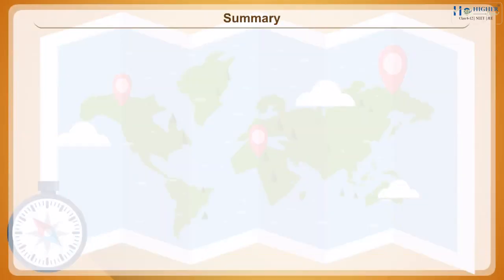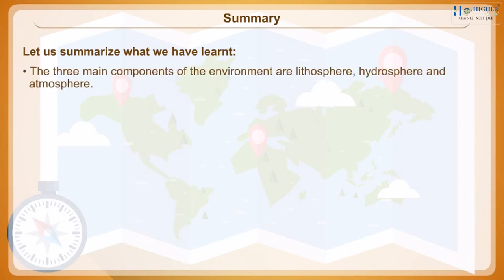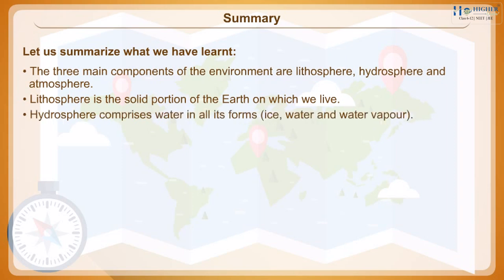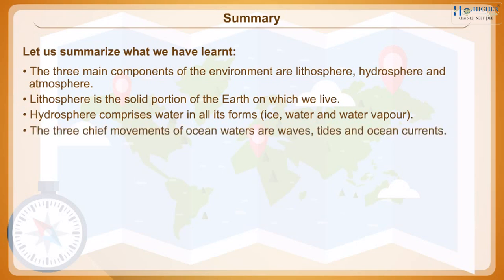Summary. The three main components of the environment are lithosphere, hydrosphere and atmosphere. Lithosphere is the solid portion of the Earth on which we live. Hydrosphere comprises water in all its forms — ice, water and water vapour. The three chief movements of ocean waters are waves, tides and ocean currents.